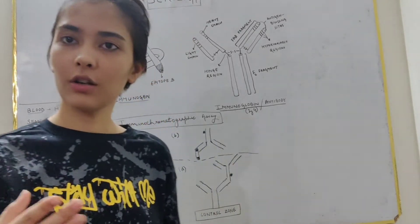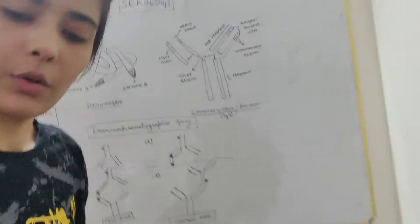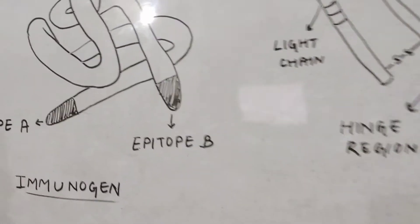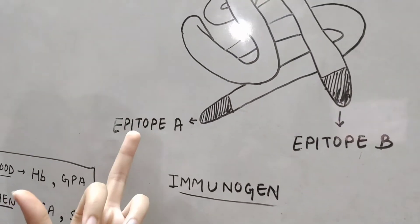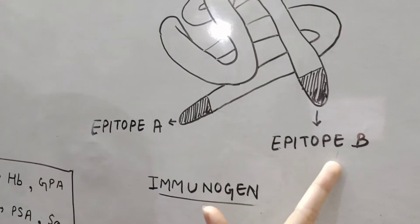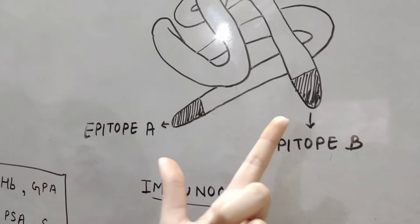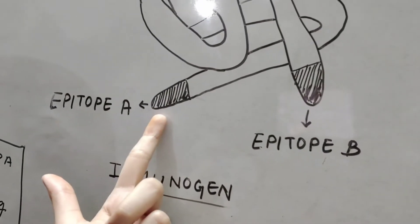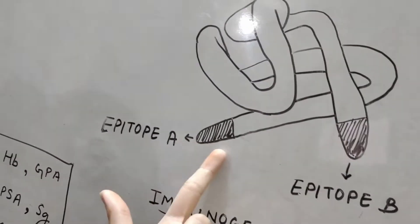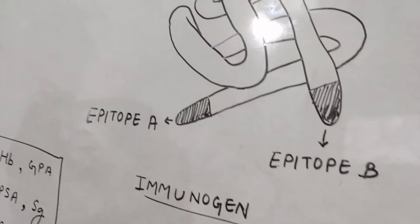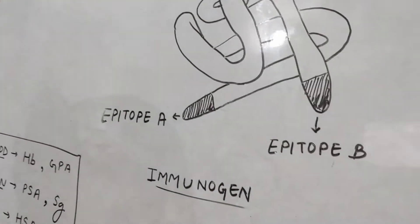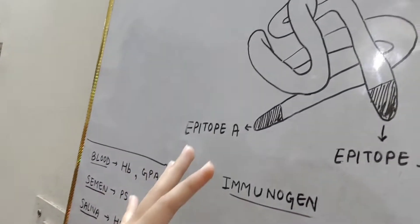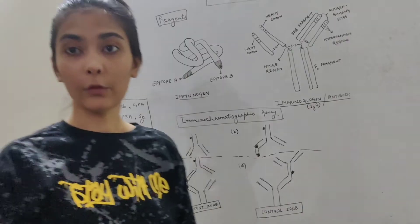Now, we will take a closer look to the structure of immunogen. This is the structure of immunogen. We have epitope A and epitope B. Epitopes are basically the sites where the antibody comes and reacts, binds, basically reacts. The epitope can be one, two or more than two. In this example, I have taken two epitopes. This is a multivalent epitope condition.